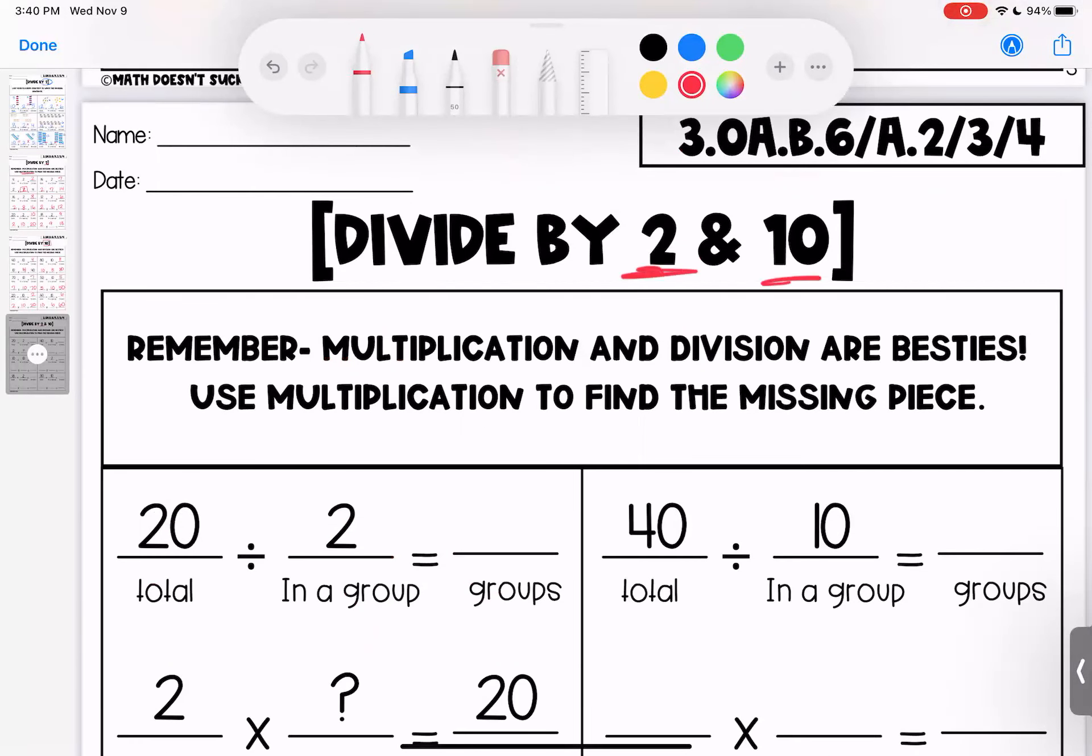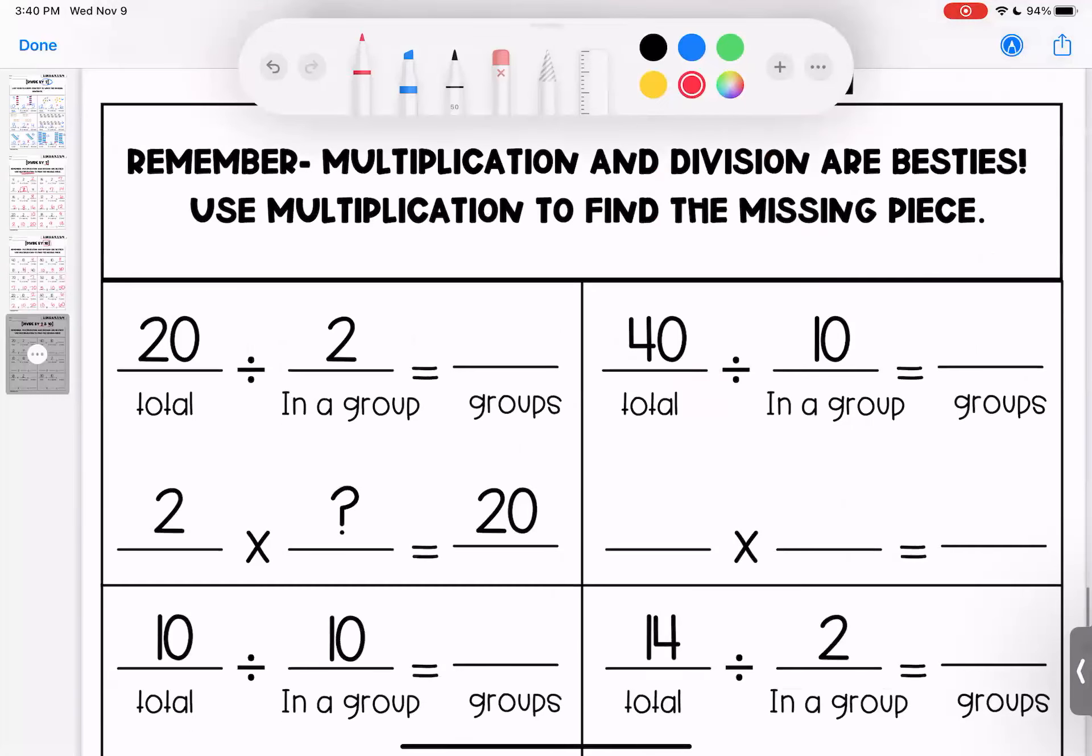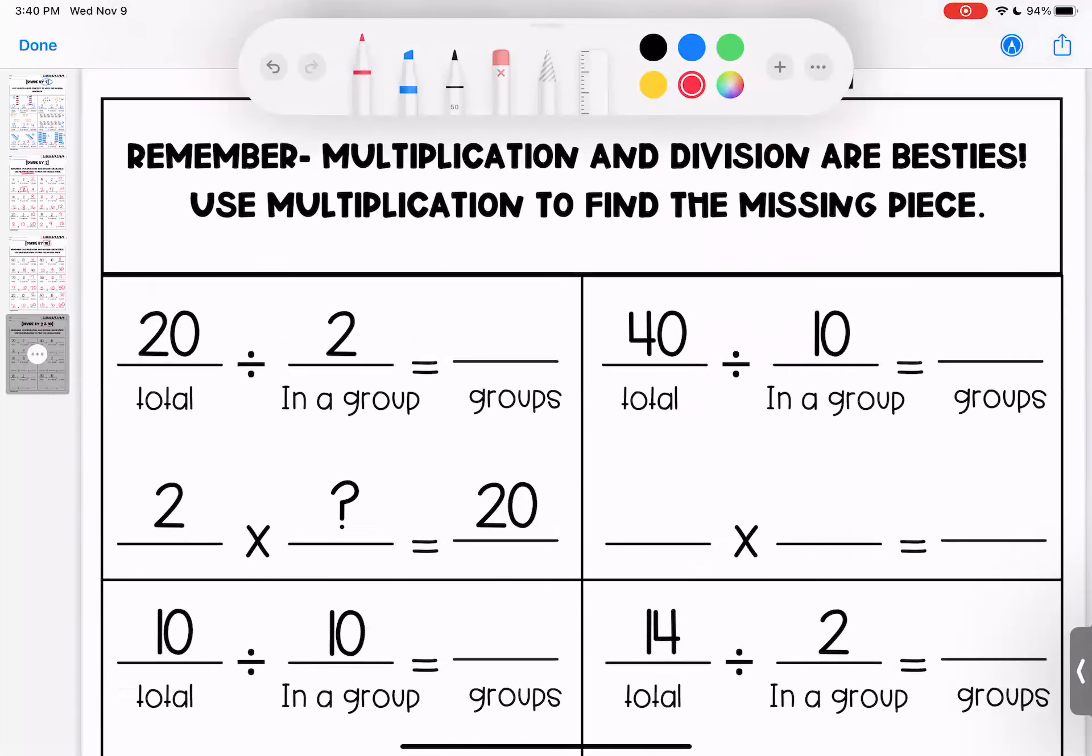This last page is looking at dividing by two and ten. So be careful. Ask yourself, which one am I solving? So twenty divided by two, I might not know, but I can think of it as multiplication. Two times ten is twenty. I could also think if I skip count by twos, how many twos do I need? I would need ten. Twenty divided by two is ten.